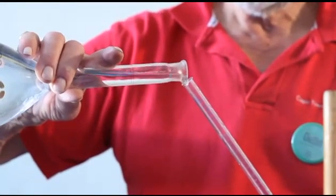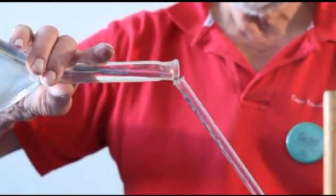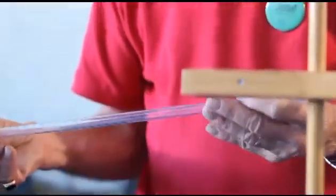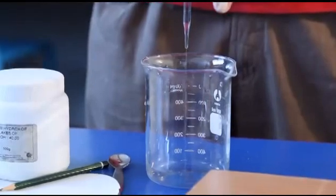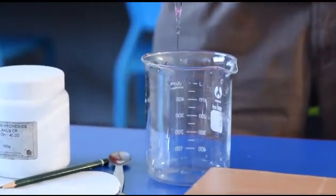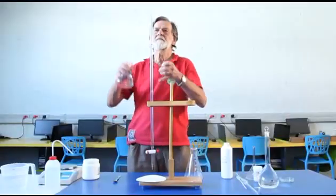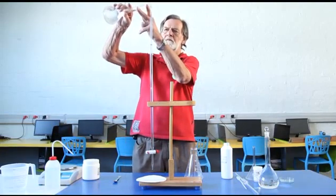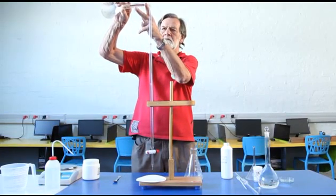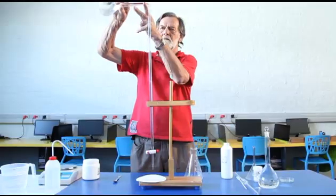Rinse a 50 milliliter burette with a little of the standard oxalic acid solution. Discard this solution. Close the tap of the burette and fill it with standard oxalic acid solution and place it in a burette stand.